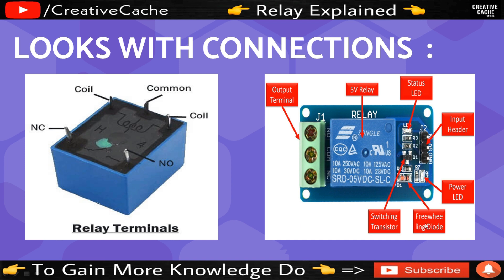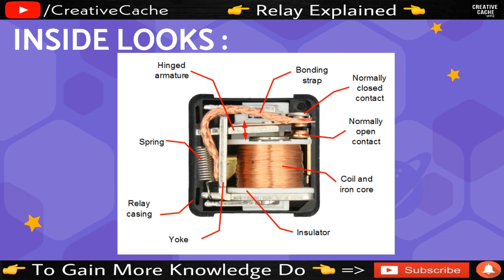On the side, we can add an input header. On this side, there is a power LED. If we have power, we can add a light. So this is 5V power, and there is a freewheeling diode and switching transistors.